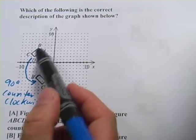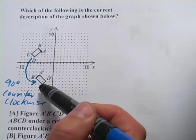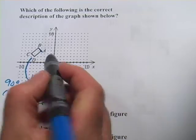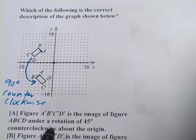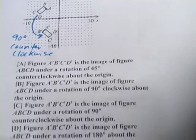So it looks to me like A, B, C, D has been rotated 90 degrees counterclockwise about the origin. Let's see if we've got an answer that's something like that down here.